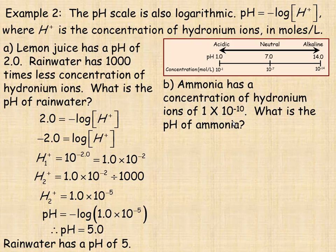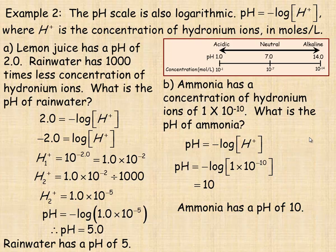In B, ammonia has a concentration of hydronium ions of 1 times 10 to the negative 10. So we're asked to find its pH. So basically, we just substitute the 1 times 10 to the negative 10 in place of the concentration. And just like before, if you take the logarithm of this, you actually get negative 10, and this changes it to positive 10. So the pH works out to be 10. So ammonia has a pH of about 10.